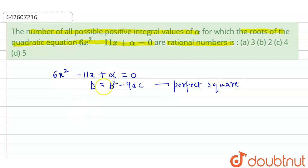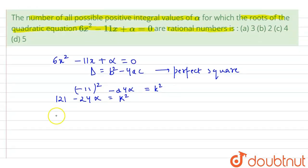Now we will calculate the discriminant: minus 11 whole square minus 24 alpha should equal k square, that is a perfect square. So we can write this as 121 minus 24 alpha should be equal to k square or this term should be a perfect square. Now we are going to use the hit and trial method. We will put different values of alpha, integral values of alpha, to see whether or not this term becomes a perfect square.